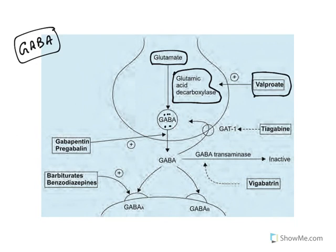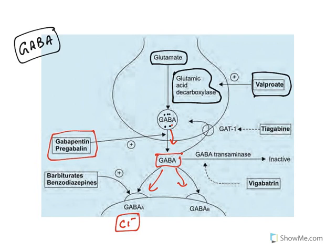Once GABA is synthesized, it is released from vesicles. The release of GABA is enhanced by gabapentin and pregabalin. Once released, GABA can act on GABA-A and GABA-B receptors. GABA-A is an ion channel — a chloride ion channel — and this is what causes hyperpolarization. Under this GABA-A receptor, drugs like barbiturates and benzodiazepines act.